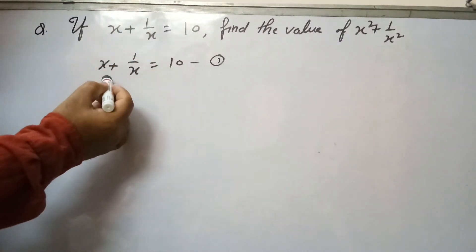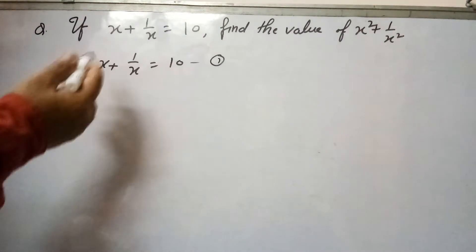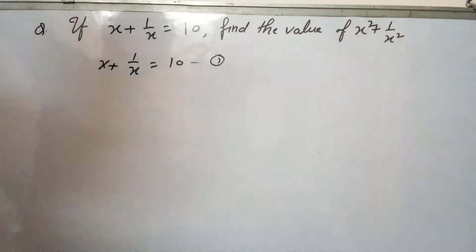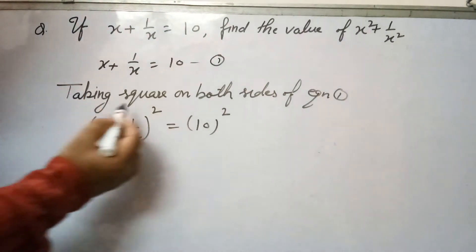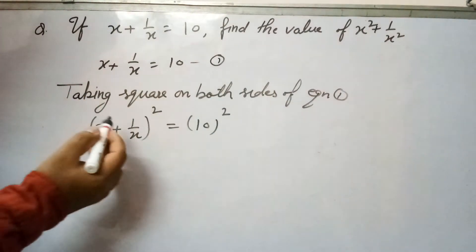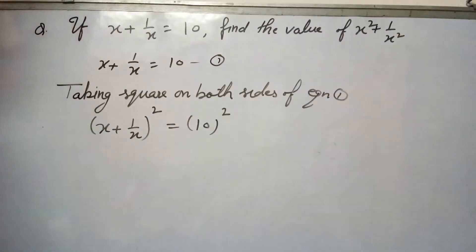If we do the square of this, we get: taking square on both sides of equation 1, x plus 1 over x whole square equals 10 square.